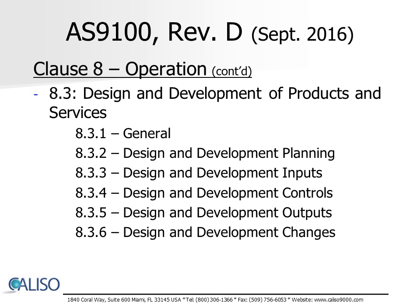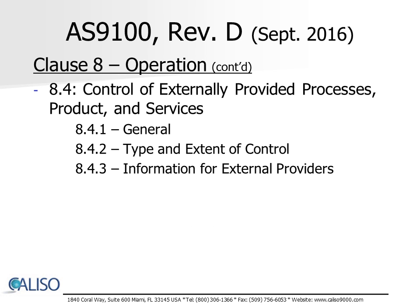Additionally, Clause 8 outlines requirements for the design and development of products and services in areas such as planning, inputs, controls, outputs, and changes. Clause 8 continues on to cover the control of externally provided processes, products, and services. The related requirements for these areas include the type and extent of control, and the information provided to external providers.